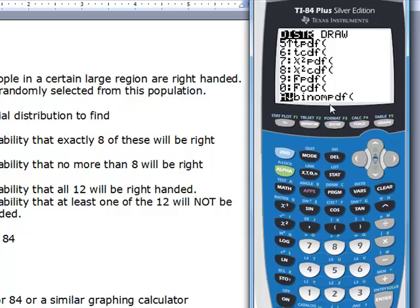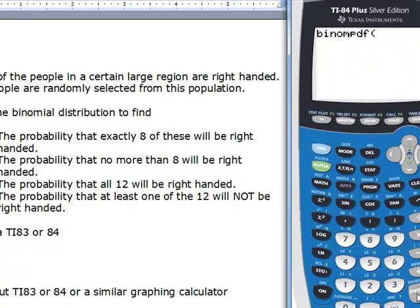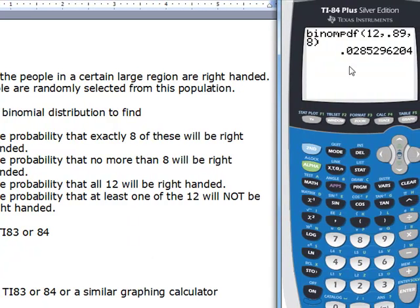Now we are going to choose binomial probability density function because we want the probability of just a particular value here. So we have 12 total number of trials. The probability involved is 0.89 and the number here is 8. The value will be 0.0285 or 3 approximately.